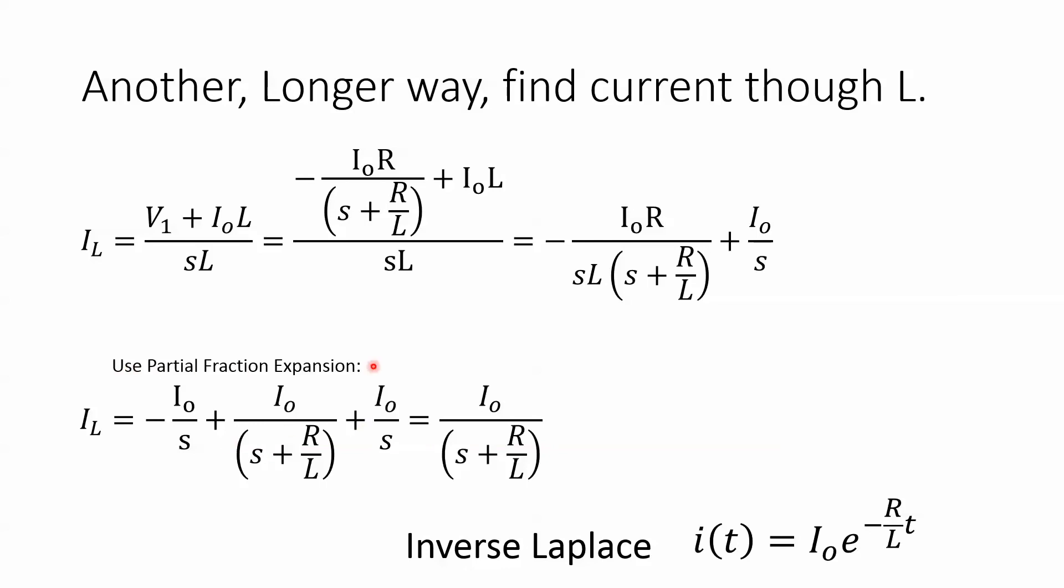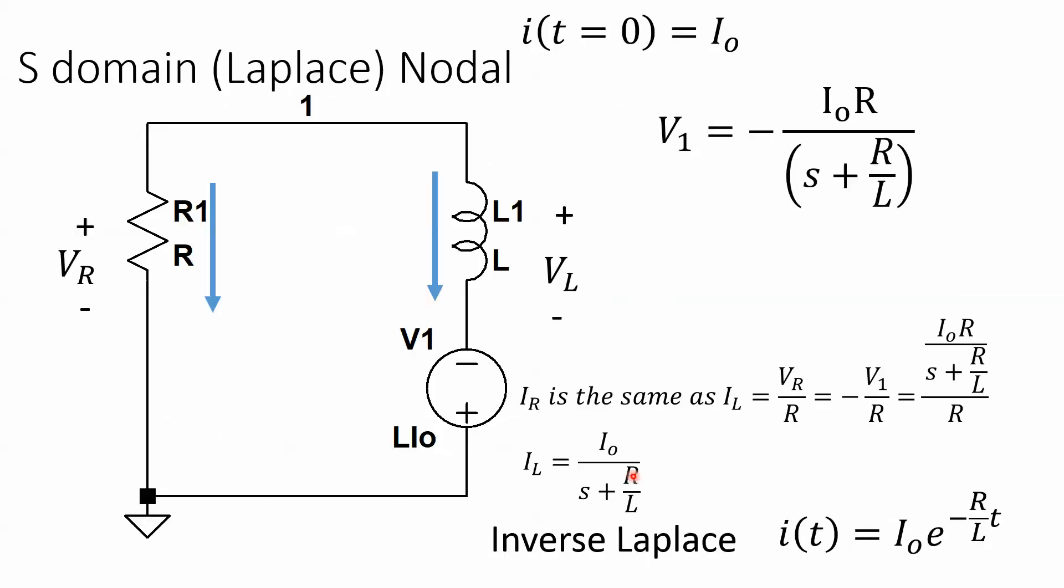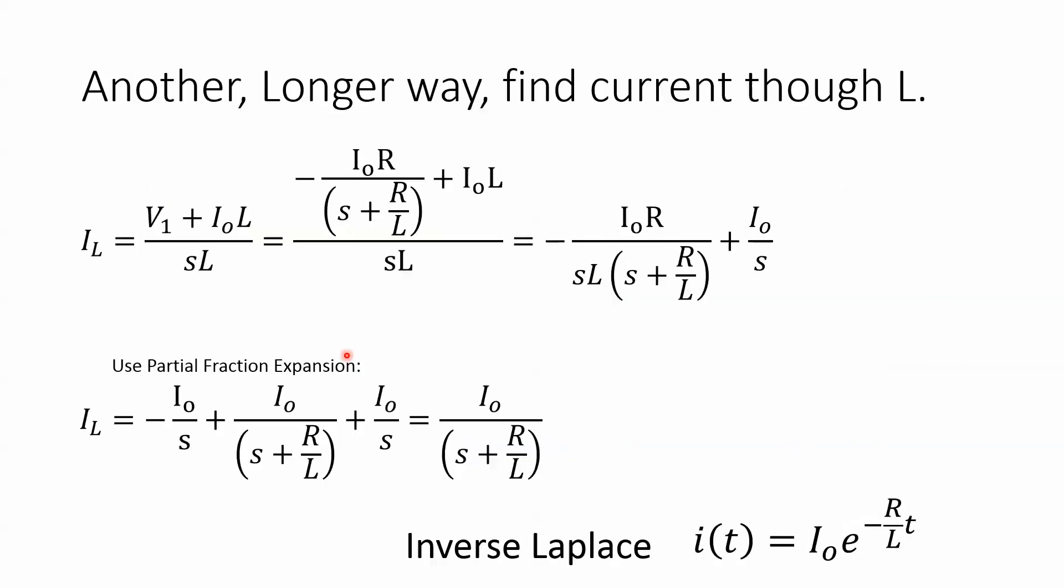So what we do is use partial fraction expansion, and you're going to have to look that up, I'm not going to go over it right now, running out of time. But when we do that, we get minus I_0 over s which cancels this out, and then we get this equation again which the inverse Laplace gives us this. So really you can do it that way but it takes a long time, where if you just took that voltage and divided by the resistance you would get it.